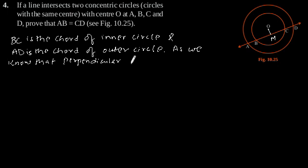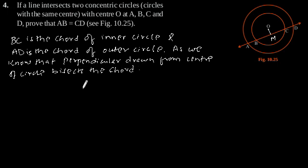Therefore we can say that BM is equal to MC. Let us say this is our equation 1. And for the outer circle AM is equal to MD. Let us say this is our equation 2.